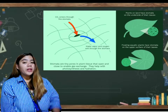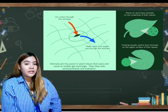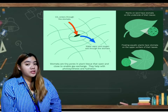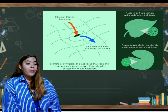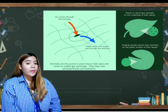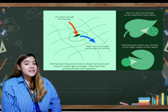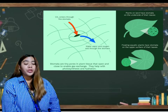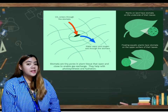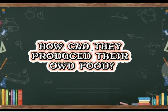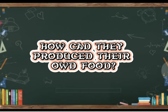By the way, class, when the stomata are open, they let in carbon dioxide. However, while open, the stomata also release oxygen and let water vapor escape. So, again, how do plants produce their own food? Basically, with the use of sunlight and carbon dioxide. But to deepen your knowledge, I will explain everything.